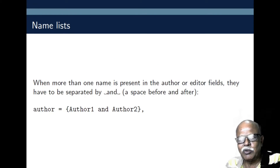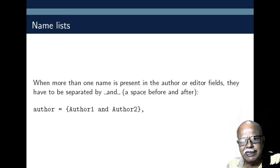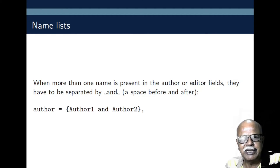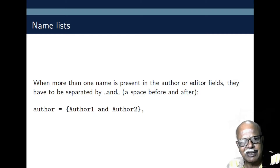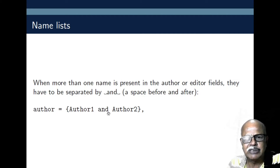When more than one name is present in the author or editor fields, they have to be separated by 'and' with a space before and after the word 'and'. Normally we write: first author, comma, second author, comma, etc., and before the last author we add 'and'. But in the BibTeX file, 'and' is used as a keyword to separate the authors.